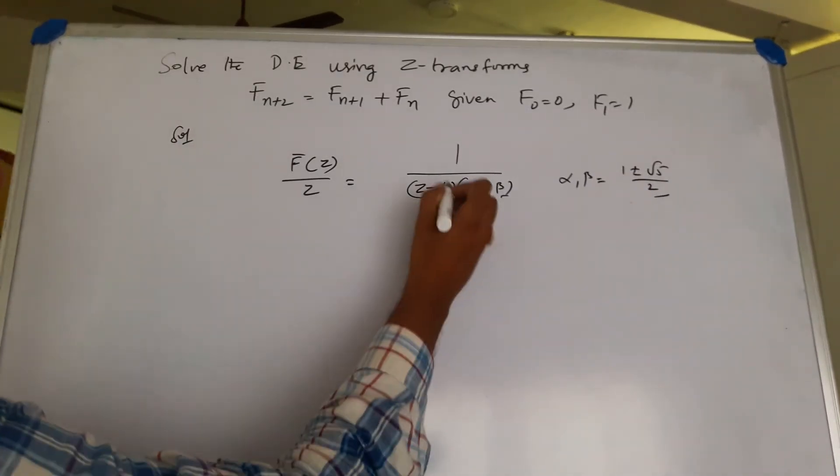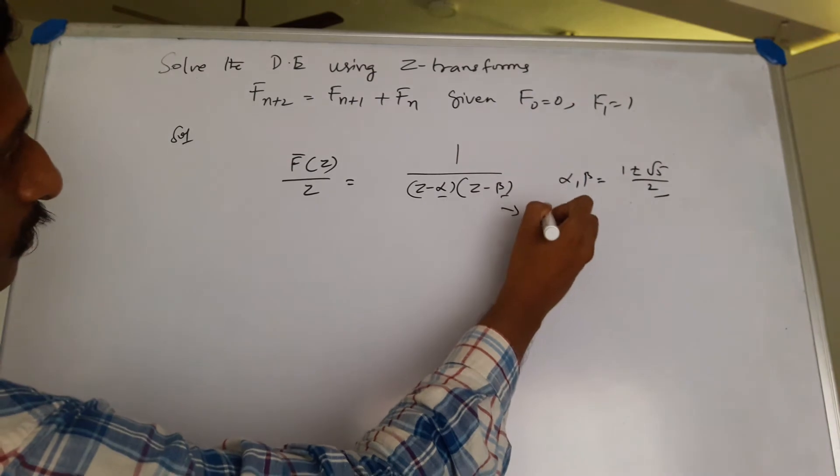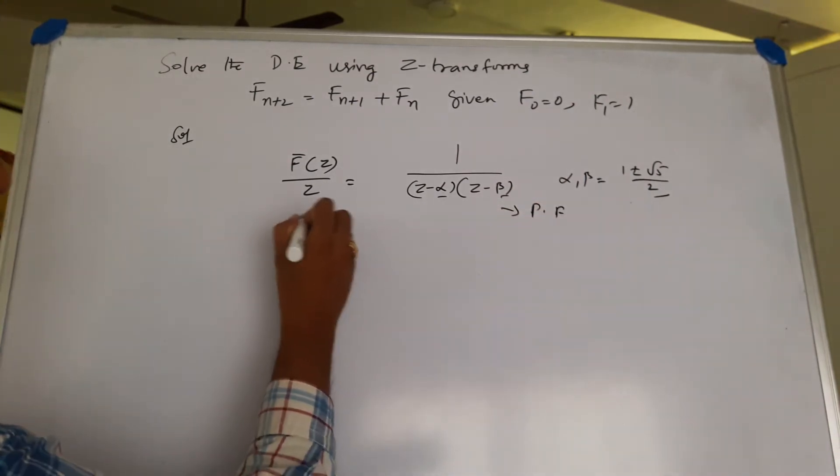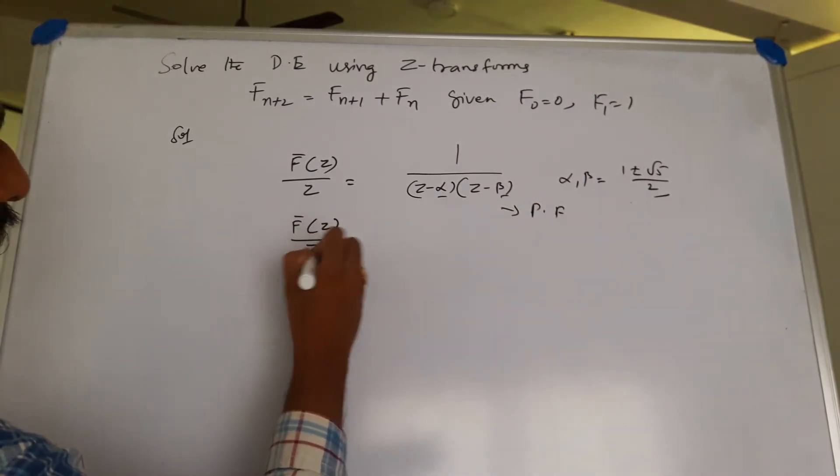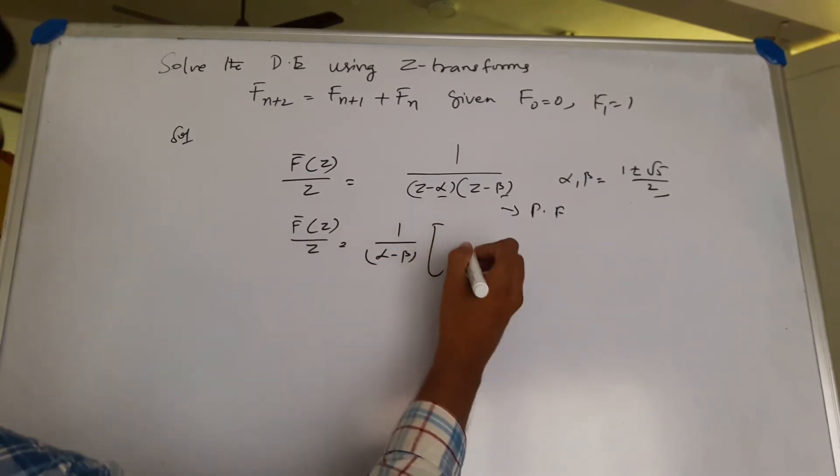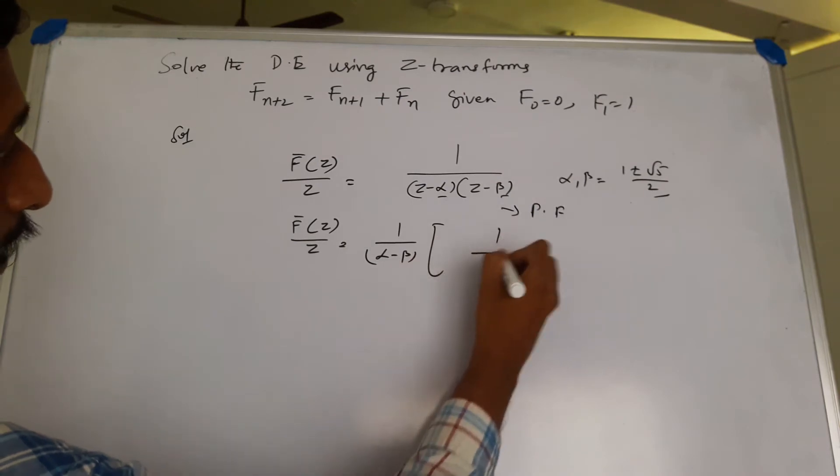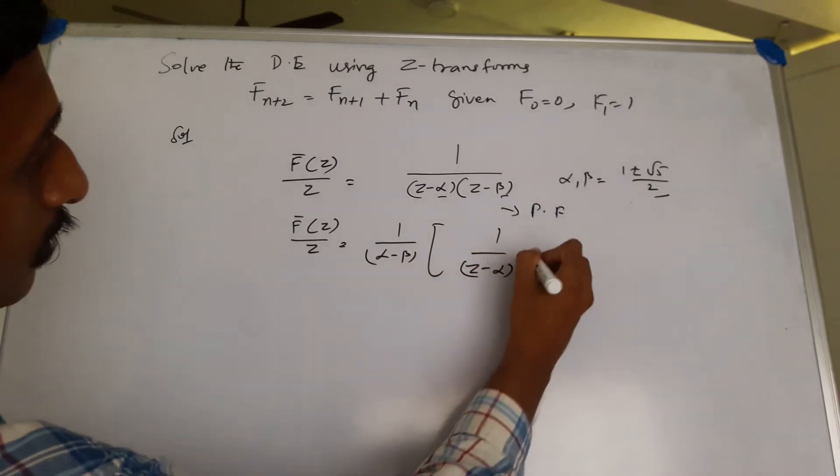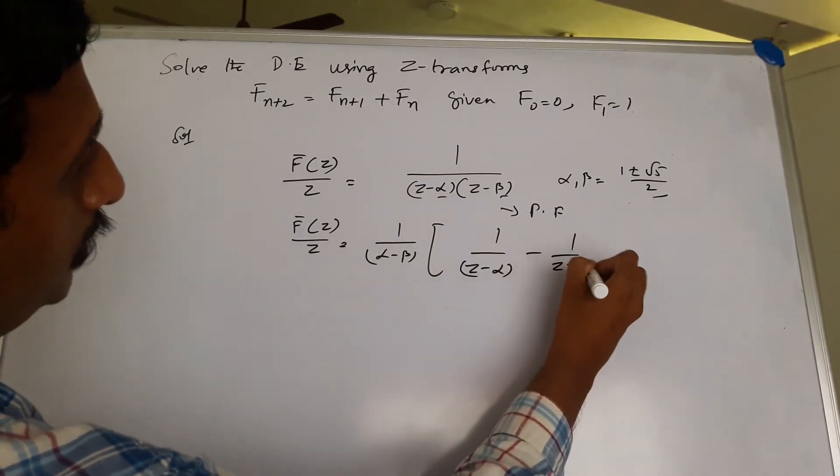Now the partial fraction decomposition corresponding to that would be 1/(α - β) times [1/(z - α) - 1/(z - β)].